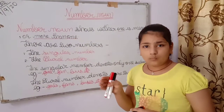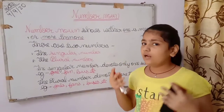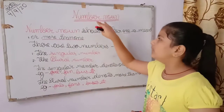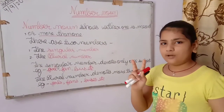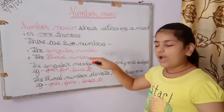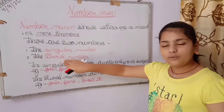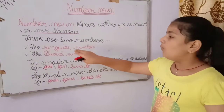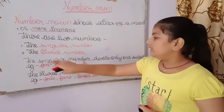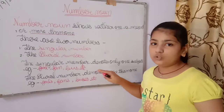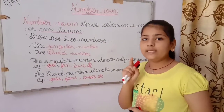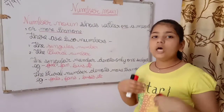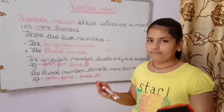In the noun, you know that there are 5 types of nouns. Similarly, in number noun also, there are 2 types of nouns. They are singular number and plural number. The singular number denotes only one object. The plural number denotes more than one object.